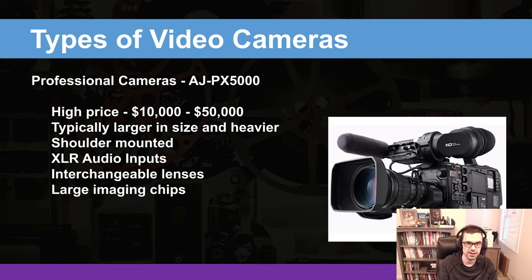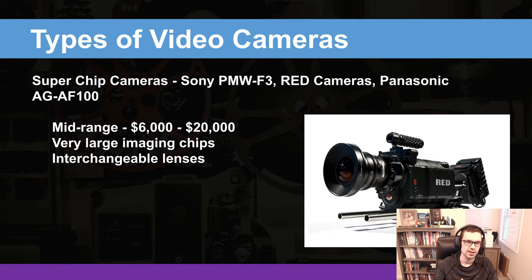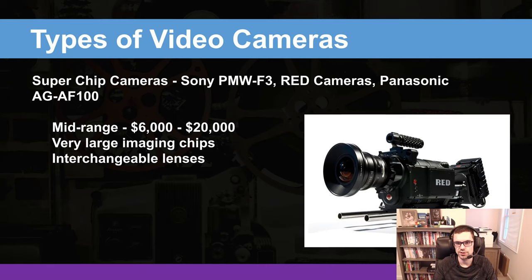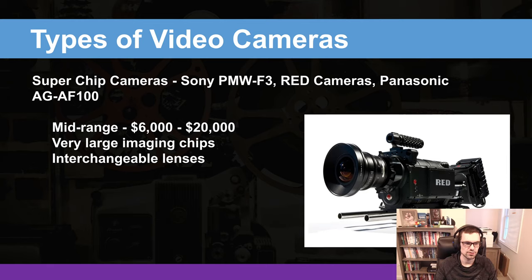Then we have super chip cameras — cameras like the Sony PMW-F3, Red cameras, and Panasonic cameras in this upper echelon, used to shoot movies. Red is a very well-known brand, but Black Magic and Sony also have their spots here. These are mid-range priced around $6,000 to $20,000 and are the type of cameras you'd see used filming something like the Avengers. They feature very large imaging chips, interchangeable lenses, and incredible options for attaching accessories.